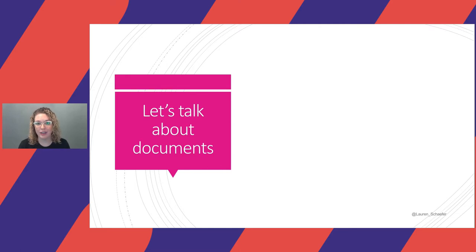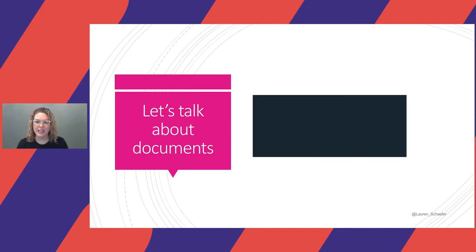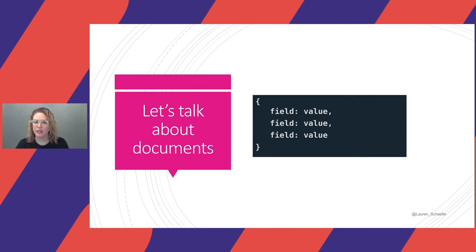Let's talk about documents. I'm not talking about Word documents — I'm talking about JSON documents. JSON stands for JavaScript Object Notation. If you've used any of the C family of programming languages, such as C, C#, Go, Java, JavaScript, PHP, or Python, documents will probably feel pretty comfortable to you. Documents typically store information about one object, as well as any information related to that object. Every document begins and ends with curly braces. Inside of those curly braces are field-value pairs. The great thing about documents is they can be incredibly rich. Values can be a variety of types, including strings, numbers, arrays, dates, timestamps, or even objects. So you can have objects within a document.